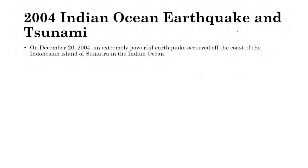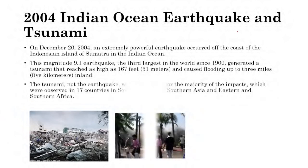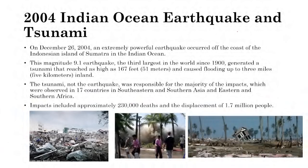In 2004, a magnitude 9.1 earthquake in the Indian Ocean — the third largest since 1900 — triggered a tsunami on Boxing Day near Sumatra, Indonesia. The tsunami reached heights of 167 feet and caused flooding up to three miles inland. It affected 17 countries across southern Asia, southeastern Asia, eastern and southern Africa, resulting in approximately 230,000 deaths and the displacement of 1.7 million people.